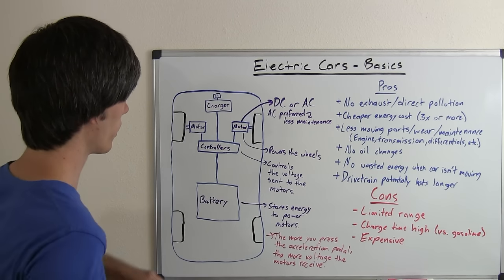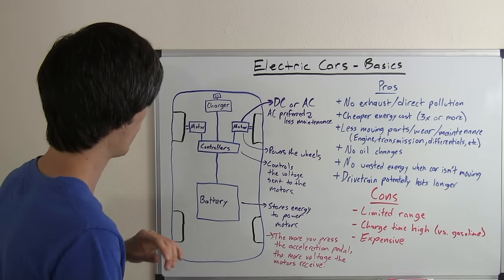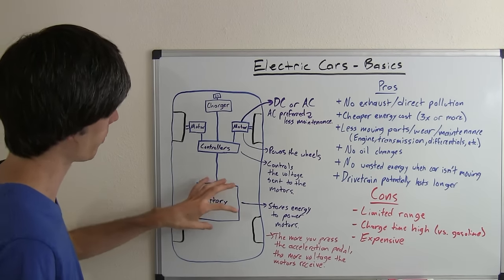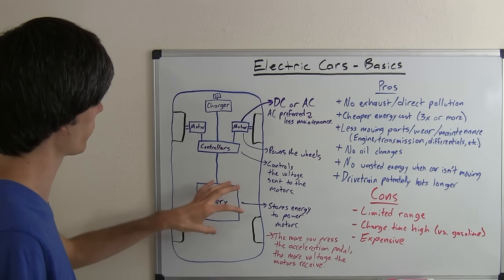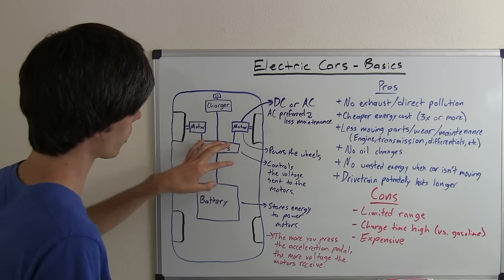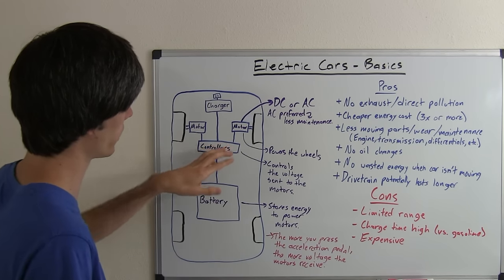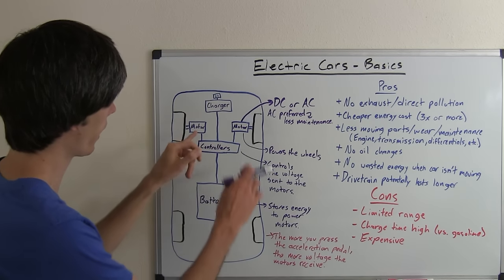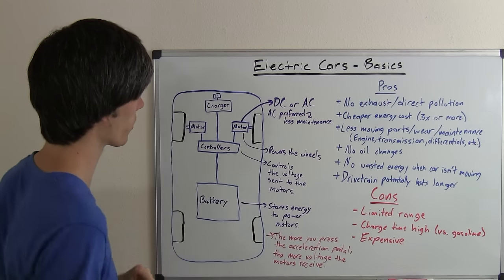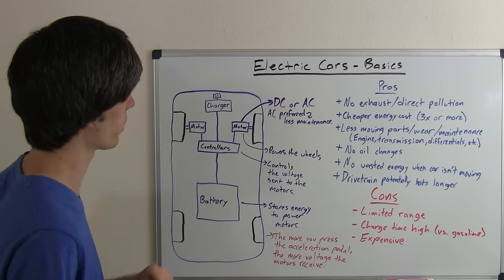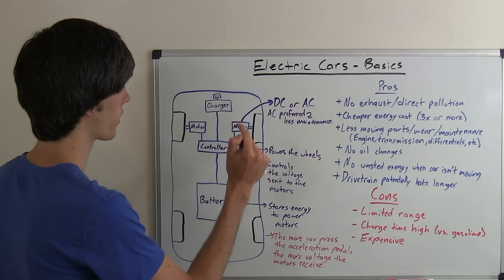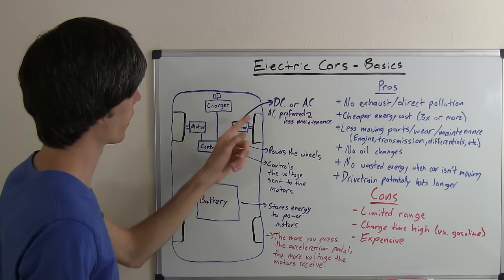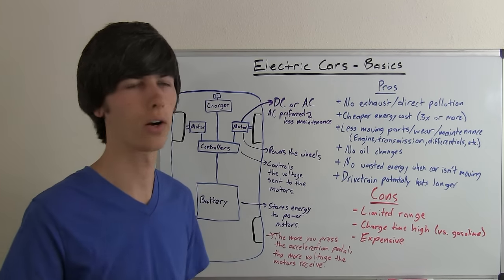Basically, all that's going on inside an electric car: you've got a battery, which is your power source that stores energy to move your vehicle. You've got a controller that controls the voltage sent to your motors. And then you've got your motors connected to your wheels. The motors take that voltage from the controller, rotate the wheels, and move your car forward.